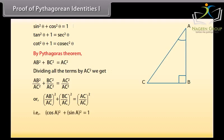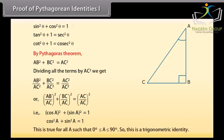That is, cos square A plus sin square A is equal to 1. This is true for all A such that 0 degree is less than or equal to A, which is less than or equal to 90 degrees. So this is a trigonometric identity.